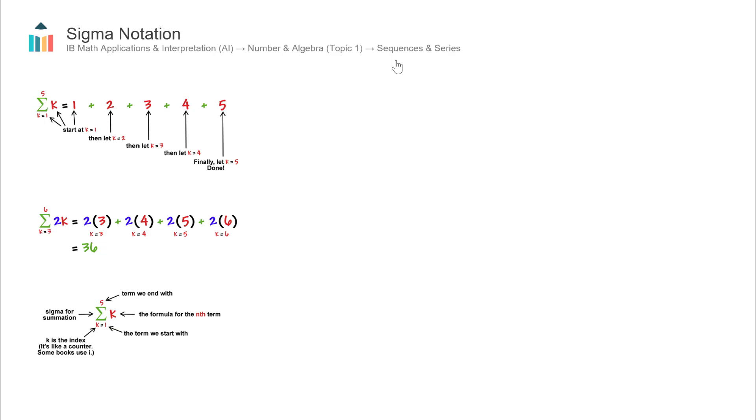So far in Sequences and Series, you would have covered Arithmetic Sequences and Series, Geometric Sequences and Series, Finding Term Values and Finding Sum of Term Values. This is another concept added on, which is around a different type of notation to show the sum of a certain number of terms in a sequence, and this is called Sigma Notation.